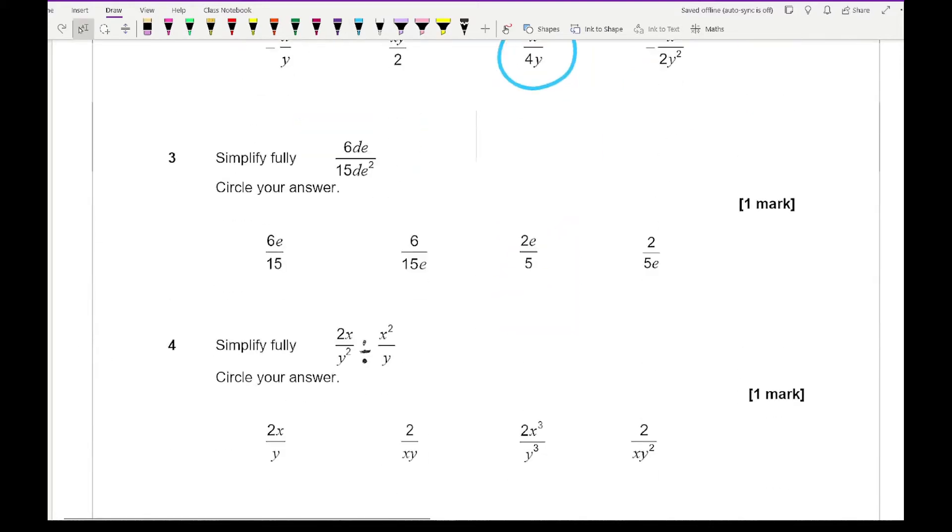With question three it says simplify fully 6DE over 15DE squared. Simplifying the numbers, I divide both by 3 which gives 2 and 5. The D's cancel and the E's cancel at the bottom. So I end up with 2 over 5E which is our fourth option.